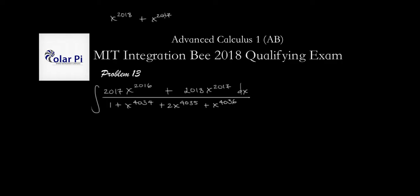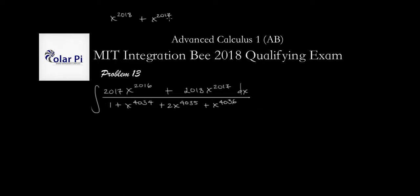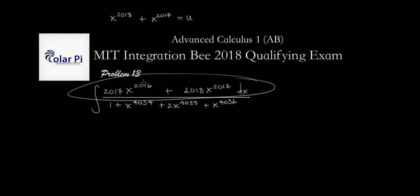What we hope for is that this is somehow also profoundly related to the denominator — and it is. If we claim that x to the 2018 plus x to the 2017 is equal to u, since we're invariably going to do u-substitution, then what we're saying is this numerator here is exactly du. And in the denominator, if we look at u squared, notice that u is of the form a plus b.